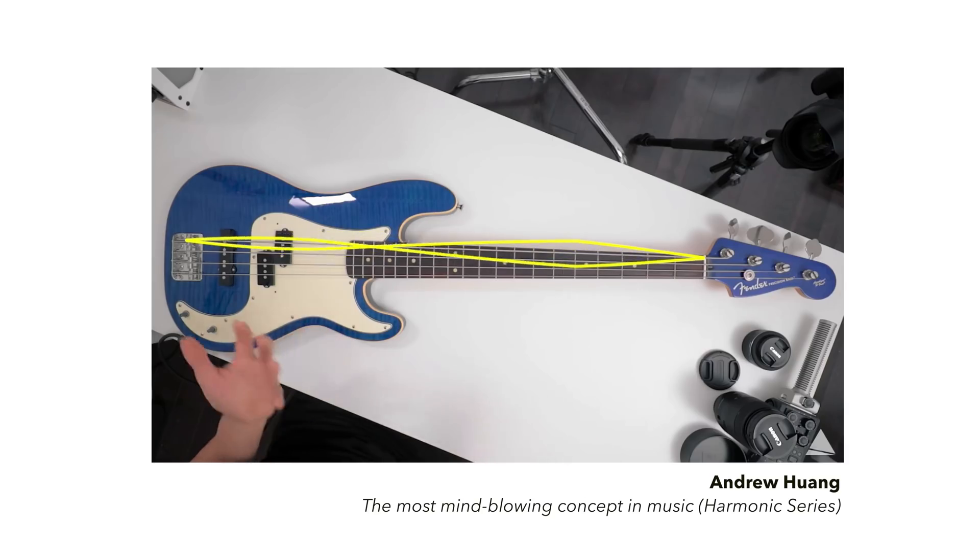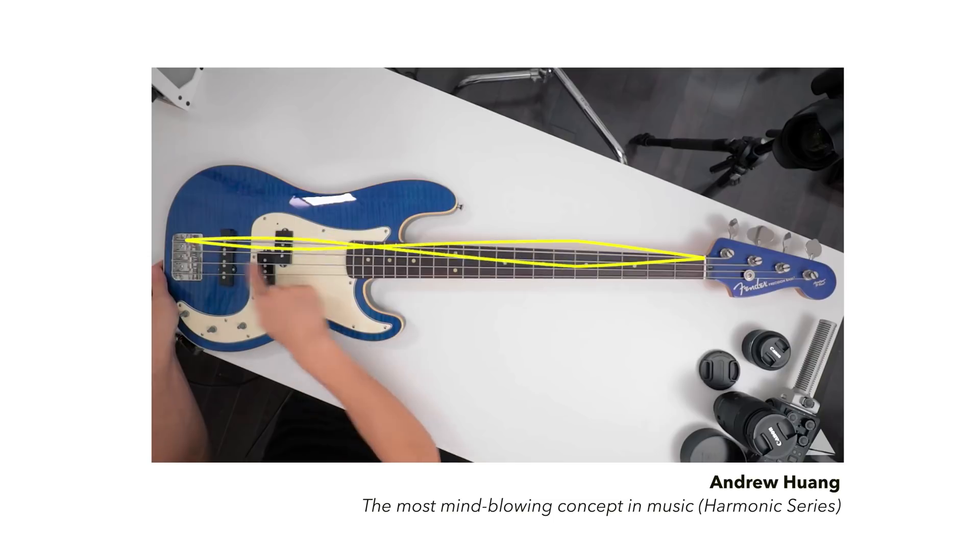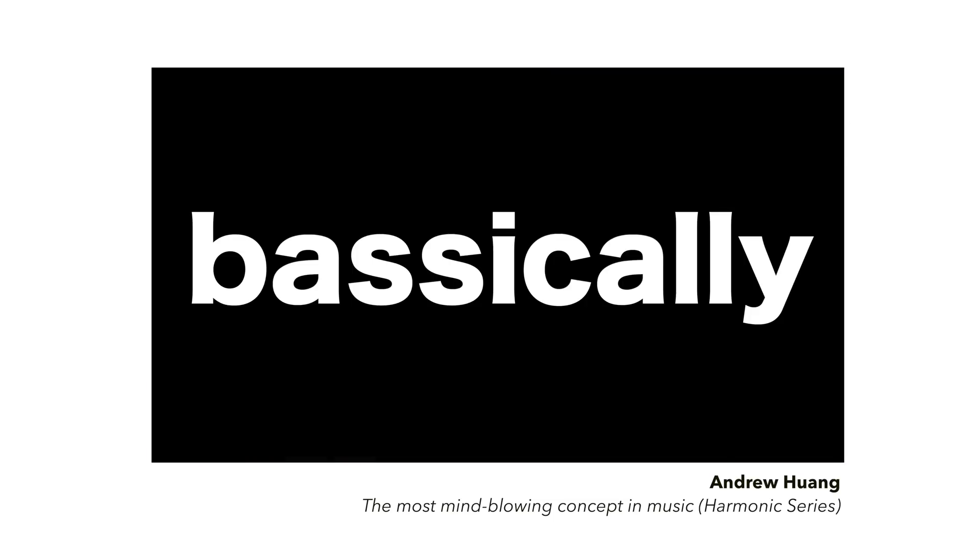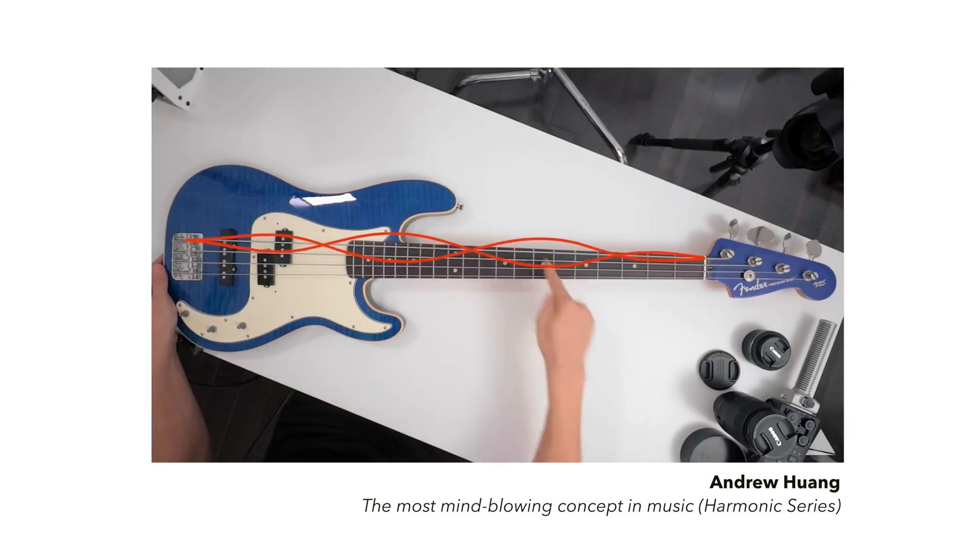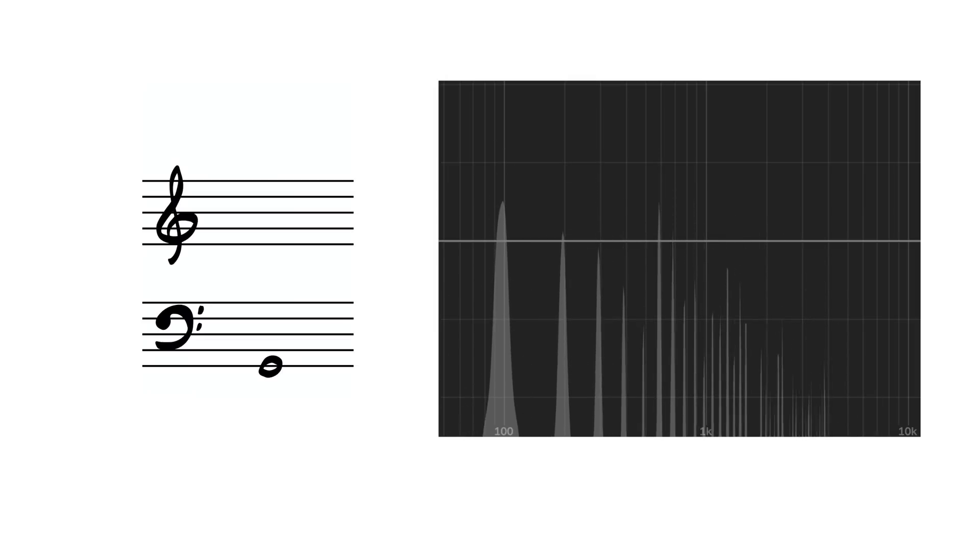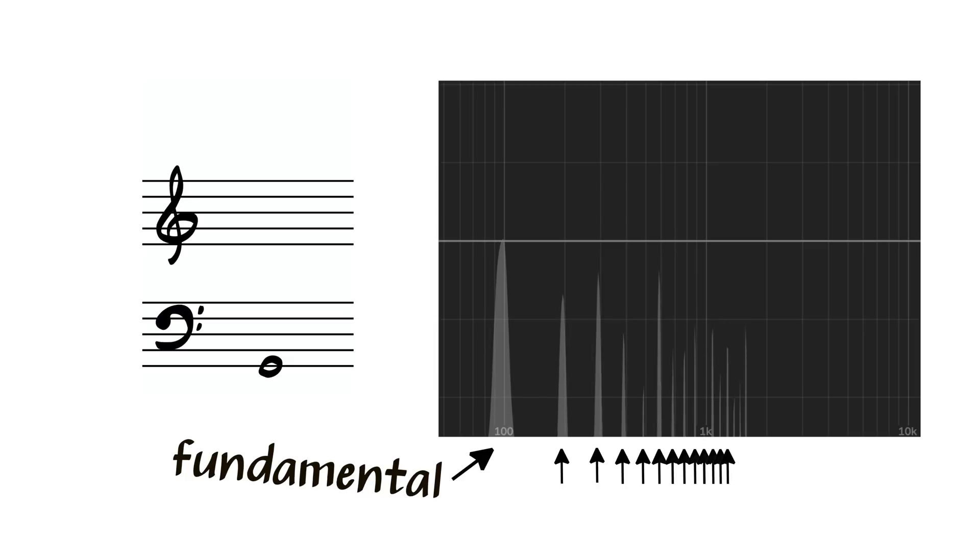Check out Andrew Huang's excellent introduction to the harmonic series if you need a primer. But basically, all notes have faint additional tones that ring out alongside them, which are multiples of the fundamental frequency. These faint additional tones are called harmonics.